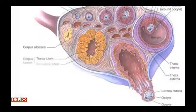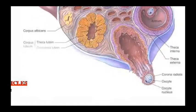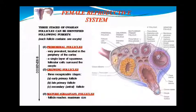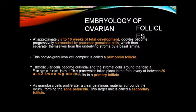When the graafian follicle is ruptured, the ovulation process continues. The oocyte comes out along with the corona radiata. After rupture, the corpus luteum is created, which has two parts — luteal cells from the theca and granulosa — and then it will eventually be converted into the corpus albicans.